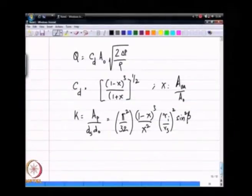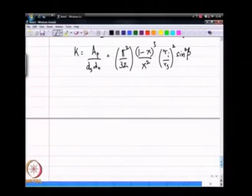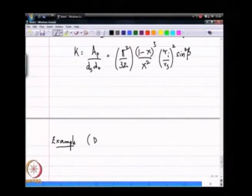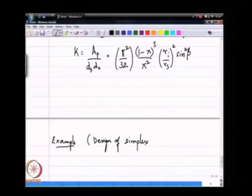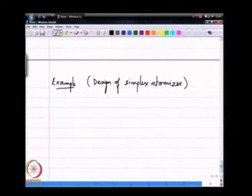Let us see if we can go through an example to actually get to some unique values. What do I have? Let us say I want to design a pressure swirl atomizer.